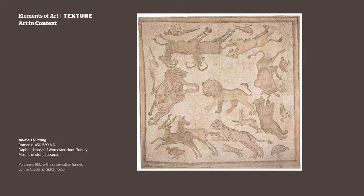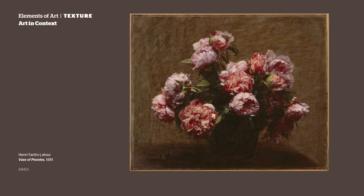Implied textures are different than real textures — they use the other elements of art to suggest texture. Let's look at Henri Fantin-Latour's painting Vase of Peonies. What texture do you think the flowers are? How did the artist imply, or create, the texture of flowers on a flat, two-dimensional surface? He used different types of lines to draw the shapes of the flowers, color to illuminate the blooms, and value to make them appear three-dimensional.